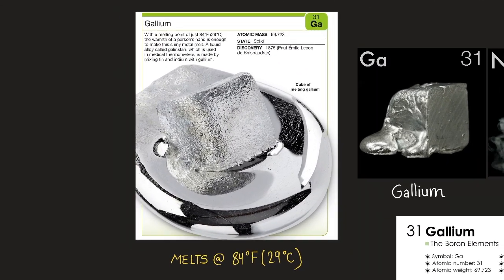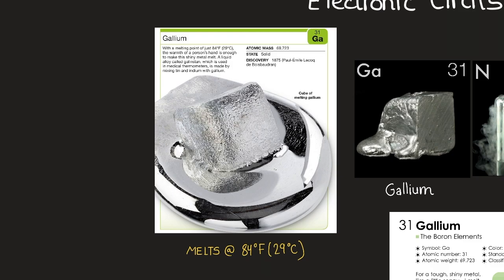Here we have some information on gallium. Again, with a melting point of just 84 degrees Fahrenheit or 29 degrees Celsius, the warmth of a person's hand is just enough to make the shiny metal melt. A liquid alloy called Galistan, which is used in medical thermometers, is made by mixing tin and indium with gallium. So here's a cube of melting gallium.